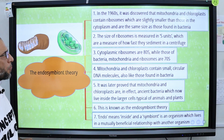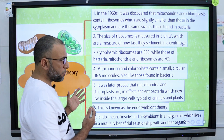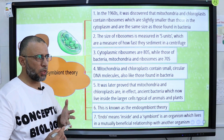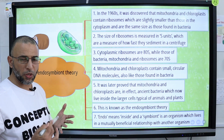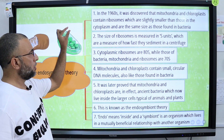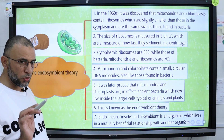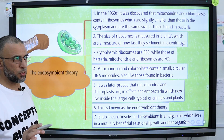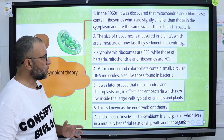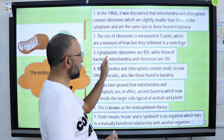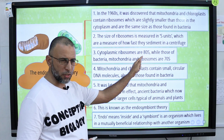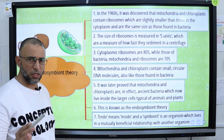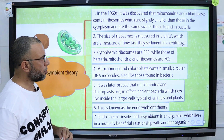Endosymbiont theory: As discussed, mitochondria have their own DNA and contain bacterial or prokaryotic ribosomes. The ribosomes present in the cytoplasm are called eukaryotic ribosomes, also known as mammalian ribosomes. They are comparatively larger in size — cytoplasmic ribosomes — with a size of 80S. The ribosomes present in mitochondria are 70S, which are bacterial ribosomes.